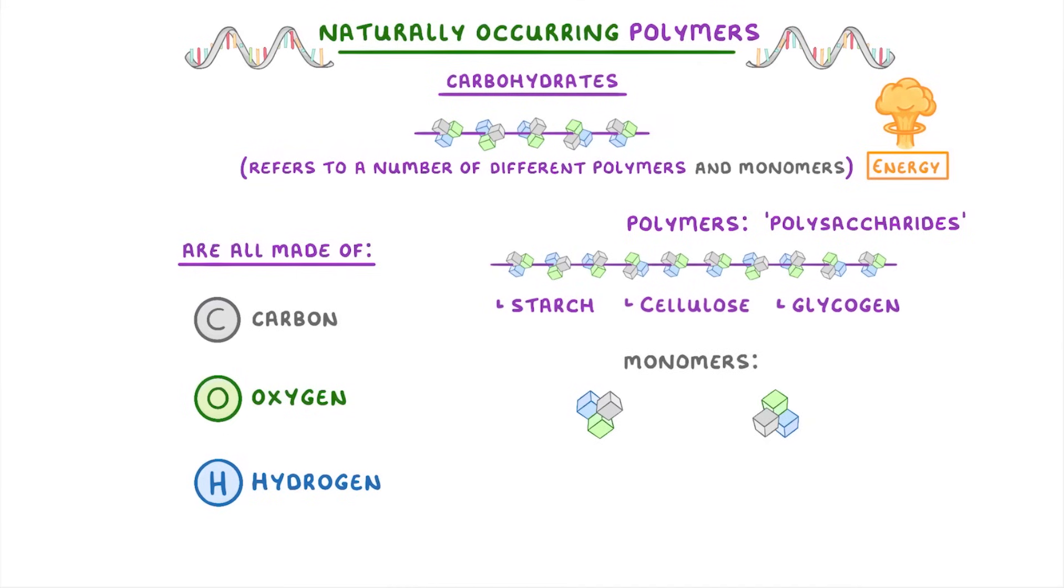While the monomers, which we call monosaccharides or just sugars, include things like glucose and fructose.